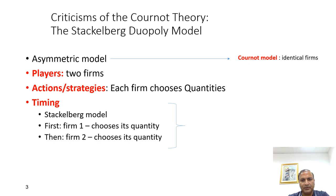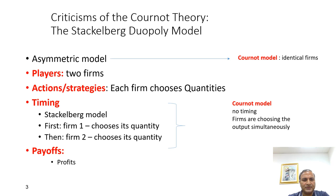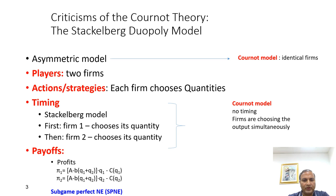In the Cournot model there is no timing — firms choose their output simultaneously at the same time. Each firm gets a payoff in terms of profits, and the profit functions are the same as in the Cournot model. But in Stackelberg we need to solve the game using subgame perfect Nash equilibrium because timing is involved, whereas in the Cournot model we find Nash equilibrium because firms choose quantities simultaneously.